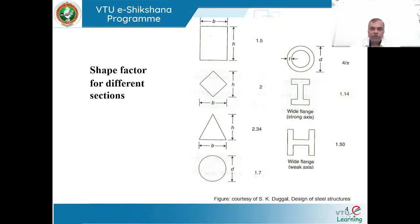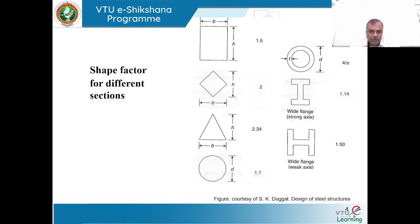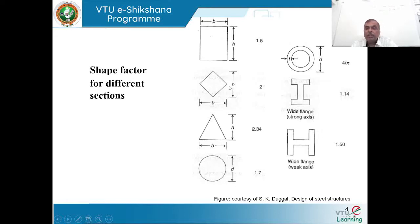You can work out shape factors for different sections. For rectangle it is 1.5, which we have derived. For a square resting on one of its edges, it is 2. For a triangle, it is 2.34 — we still need to see the derivation. For a circle of diameter D, the shape factor is 1.7. For a hollow tube with varying thickness, the value is 4/π. For an I-section, it is close to 1.14, and for the same I-section kept as a T-section, it is close to 1.5.